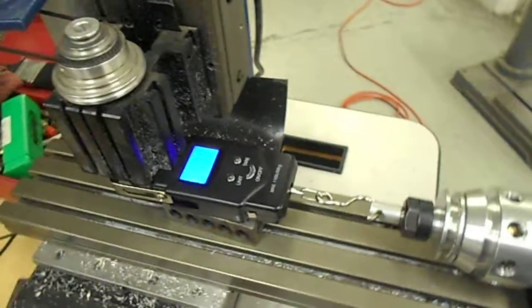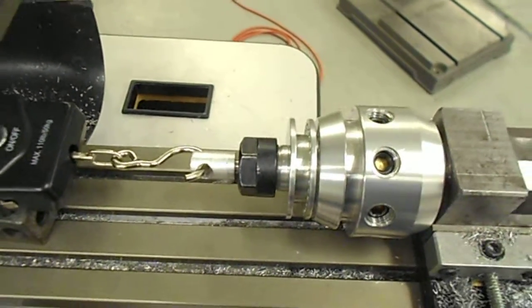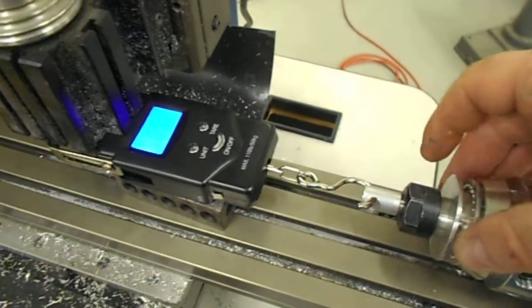So right at 70 pounds is what the spindle or what the tool holder, what it takes for the tool holder to be able to be pulled out of the spindle.